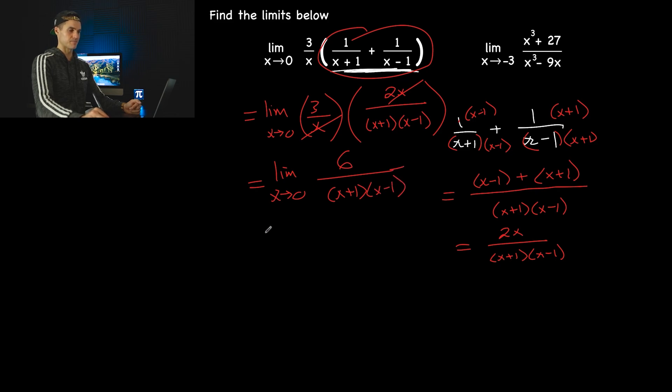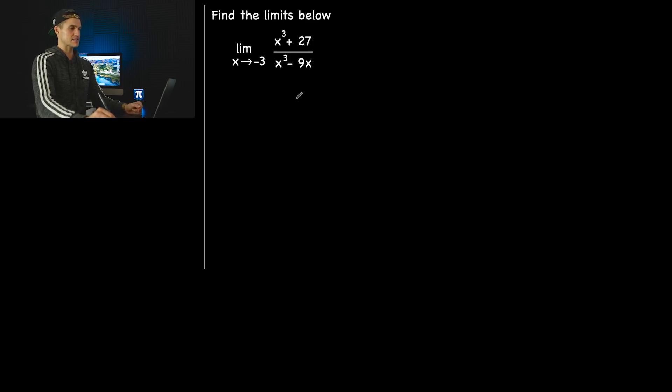We could plug in 0 now. Nothing here would be undefined. So we'd have 0 plus 1, which is 1, times 0 minus 1, which is negative 1. This would end up being 6 over negative 1, which is negative 6. That would be the answer for the first limit.